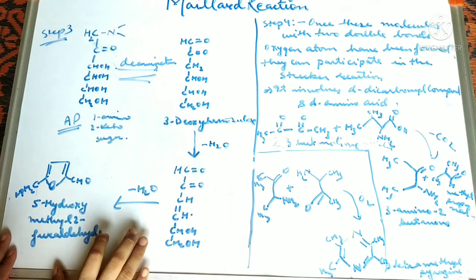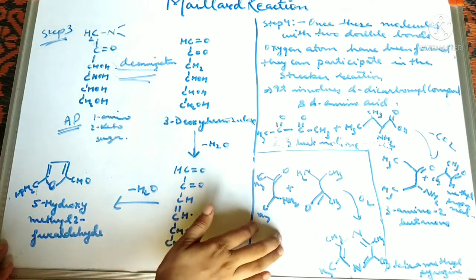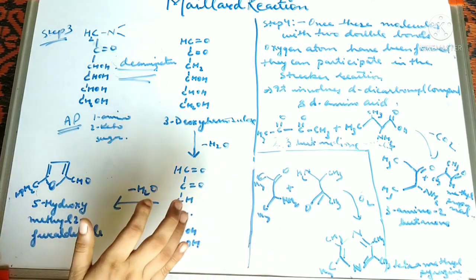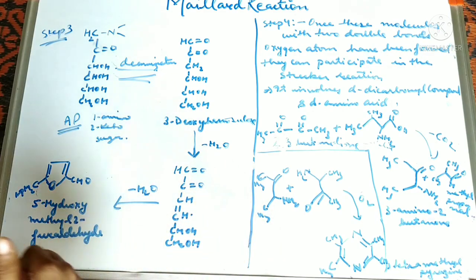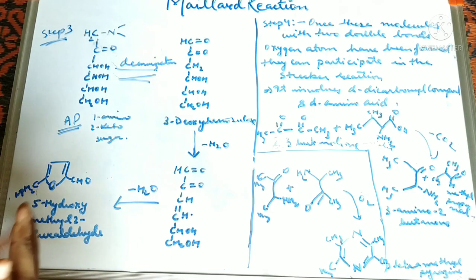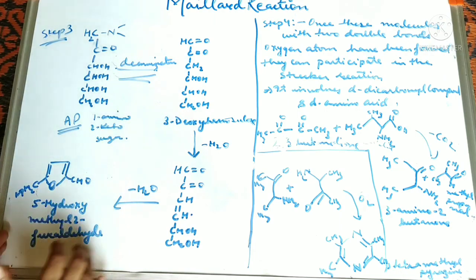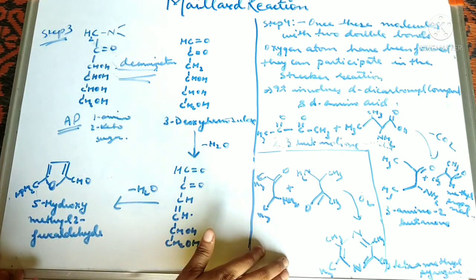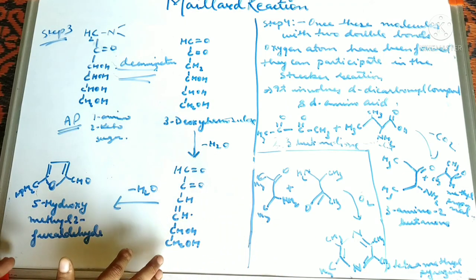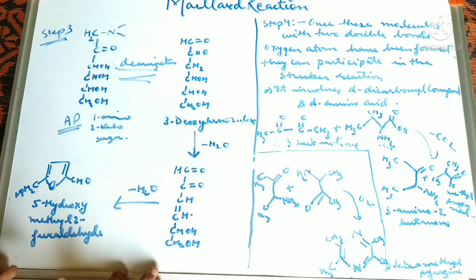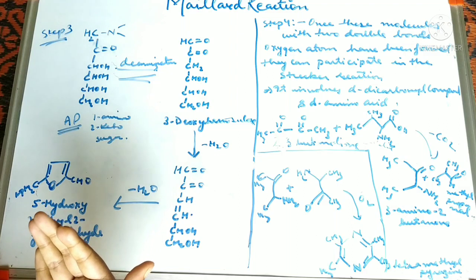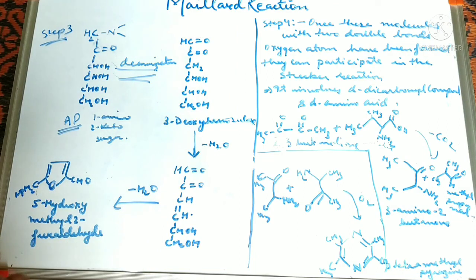After all these products are formed, they form a polymer chain through polymerization, producing melanoidins, which are responsible for the brown coloration. The pyrazines and HMF are responsible for the aroma and flavor, while the melanoidins are responsible for the brown or brown-black color seen in food items.